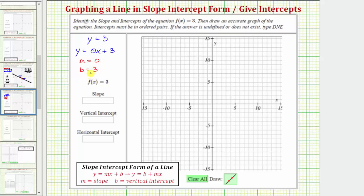Remember we want the intercepts as ordered pairs, so if the vertical intercept is positive three, which should be this point here, the ordered pair is zero comma three. So now we know the slope is zero, and the vertical intercept is the ordered pair zero comma three.